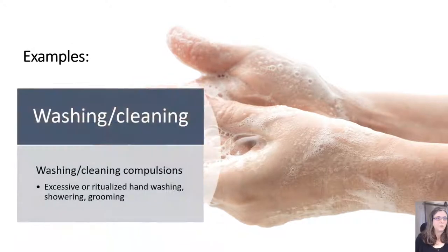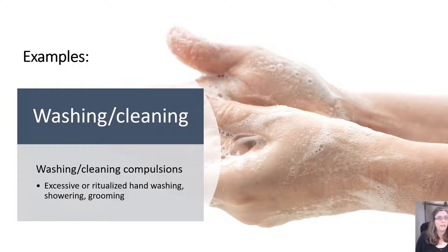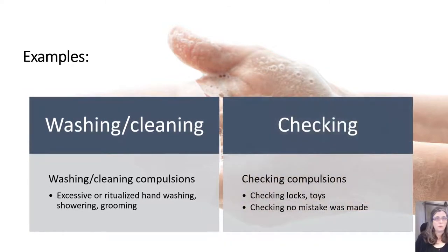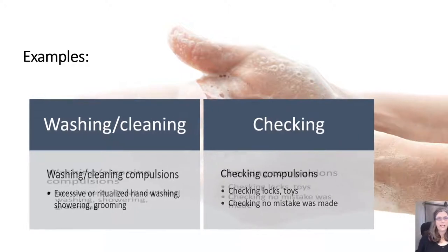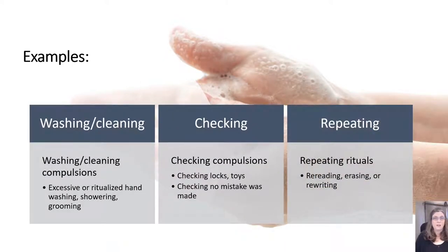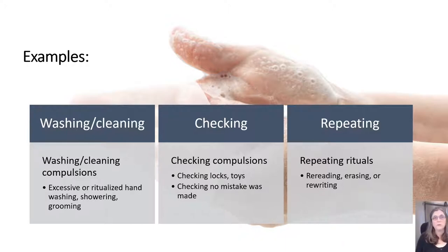Most people are really familiar with handwashing right now during the pandemic, and this is going to feed into that quite a lot. Excessive ritualized handwashing means washing hands to the point where they're raw, for minutes or hours at a time. Checking is another common compulsion — checking a lock, checking whether toys are in order, checking that no mistakes have been made over and over again, which can slow down student workload. Repeating rituals such as rereading also occur. My middle boy had a tendency to reread, and we thought he had a reading disorder. He was assessed by a psychologist, and it turned out he was just rereading — that's why he was reading slowly.